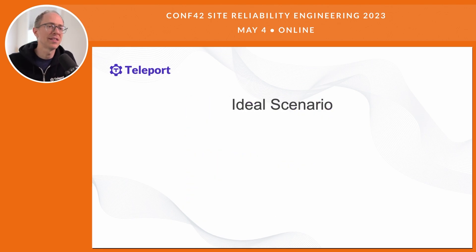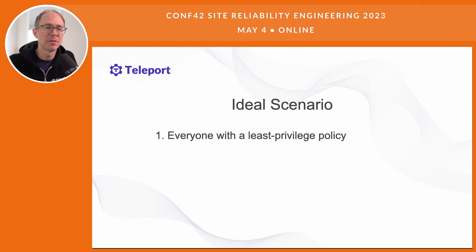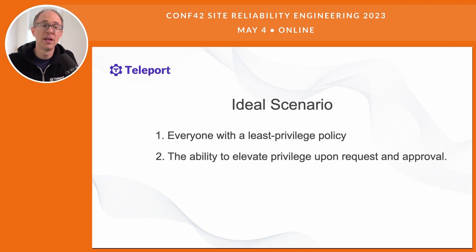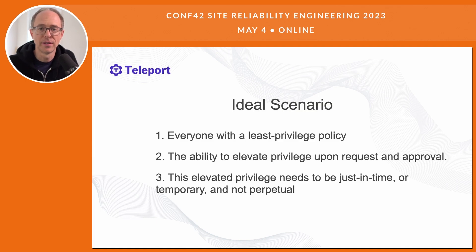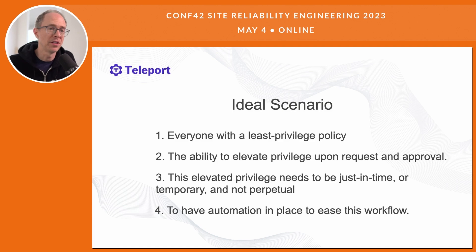So what is this ideal scenario? There are four parts to it. Number one, everyone has a least-privileged policy. Number two, the ability to elevate privilege upon request and approval. Number three, this elevated privilege needs to be just-in-time or temporary, not perpetual. And then finally, there needs to be automation in place to ease this workflow.